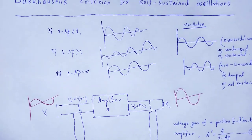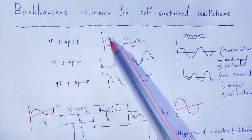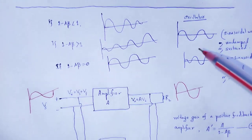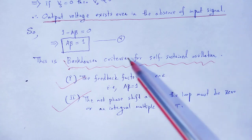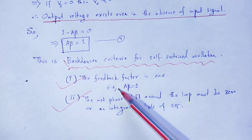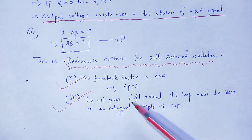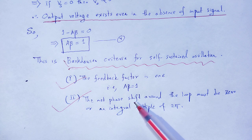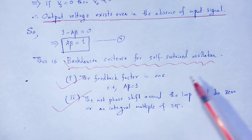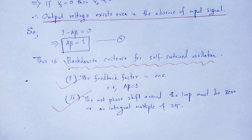With the help of this video lecture we understand Barkhausen's criteria for self-sustained oscillations. The two criteria are: one, the feedback factor A·beta equals 1; and two, the net phase shift around the total loop must be zero or an integral multiple of 2π. If these two are satisfied we obtain self-sustained oscillations in a feedback amplifier. Thank you.